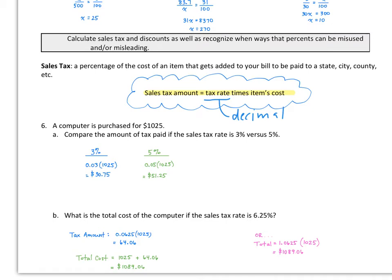In our first example, a computer is purchased for $1,025. Let's compare the amount of tax paid if the sales tax rate is 3% versus 5%. If it's 3%, we write that as 0.03 times $1,025, and we get $30.75. If it's 5%, 0.05 times $1,025 gives us $51.25. So obviously, we want to shop where there are lower sales taxes.